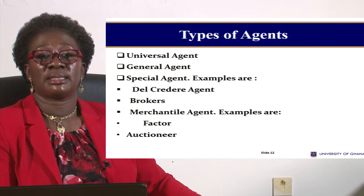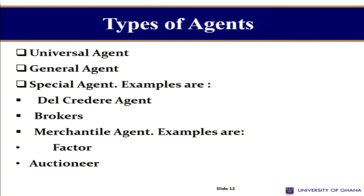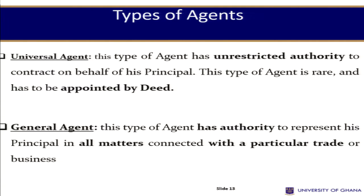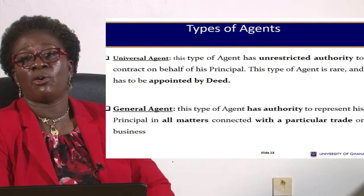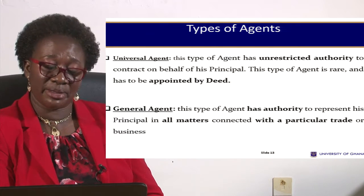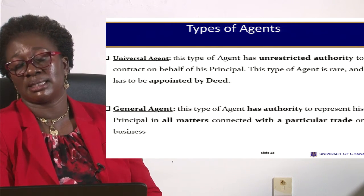There are several types of agents: universal agents, general agents, and special agents — with special agents having further sub-types including del credere agents, brokers, mercantile agents, factors, and auctioneers. A universal agent is one who has unrestricted authority to contract on behalf of his principal — he is given open authority and can do anything within that authority. Because of the nature of such authority, it can only be created by a deed, which is a contract under seal. It is quite rare.